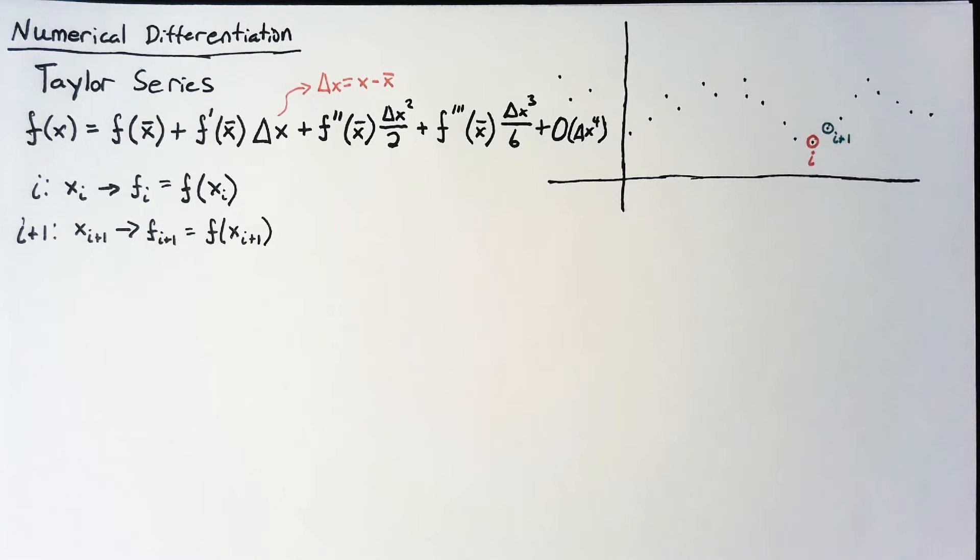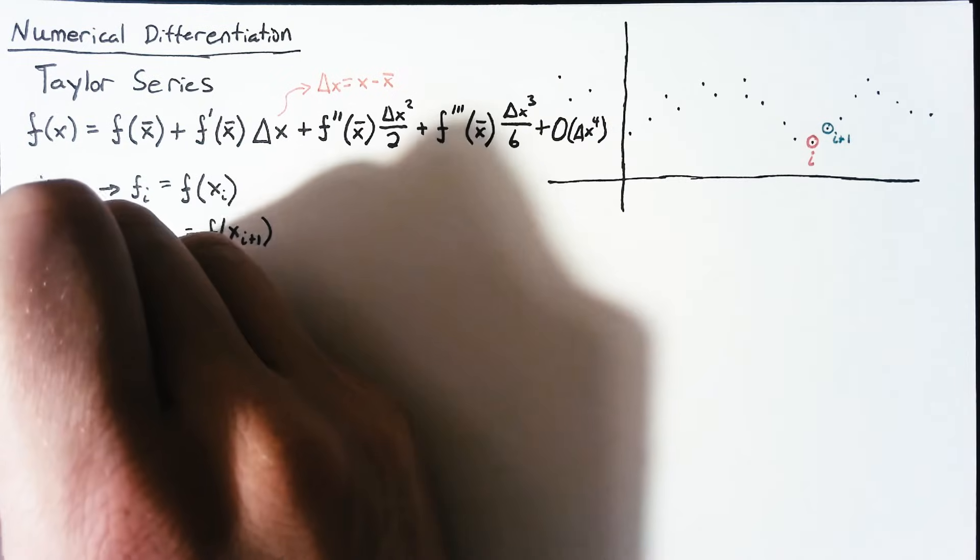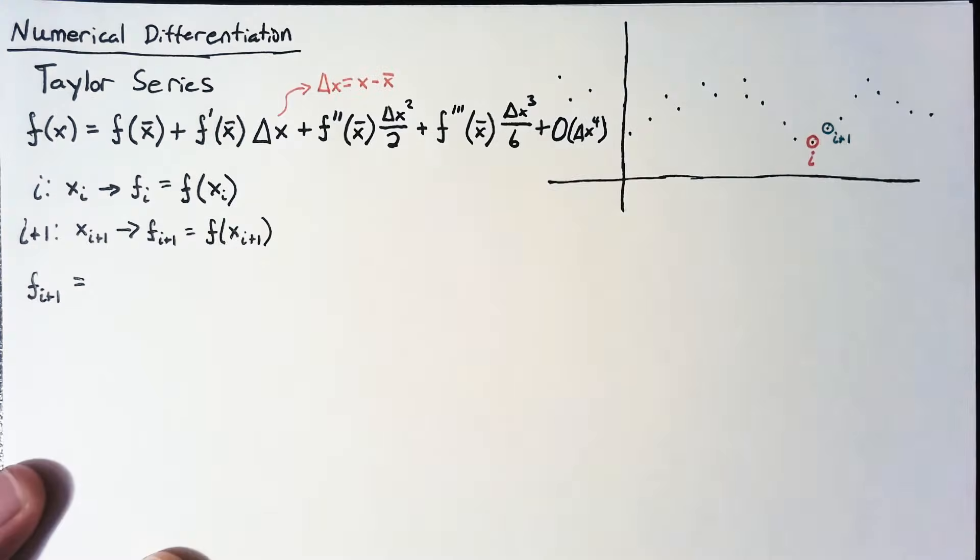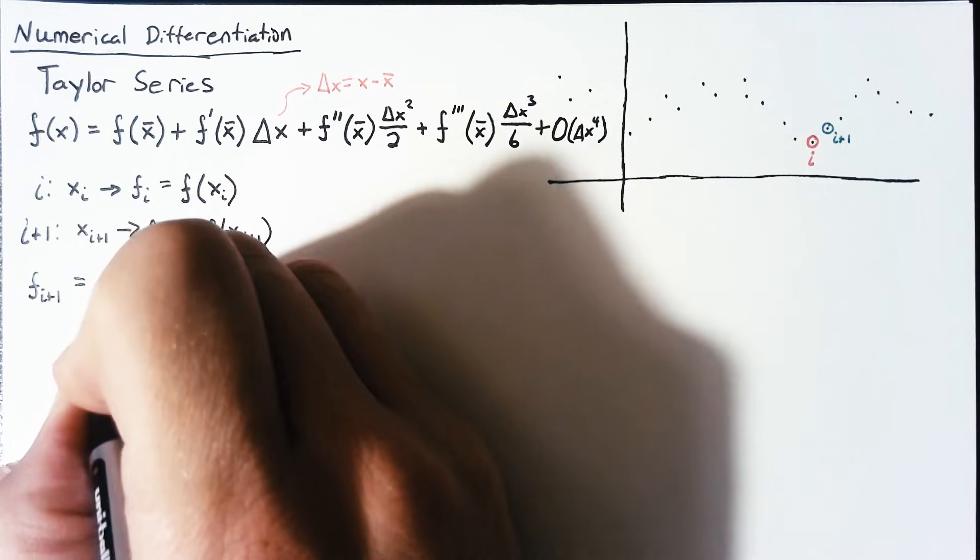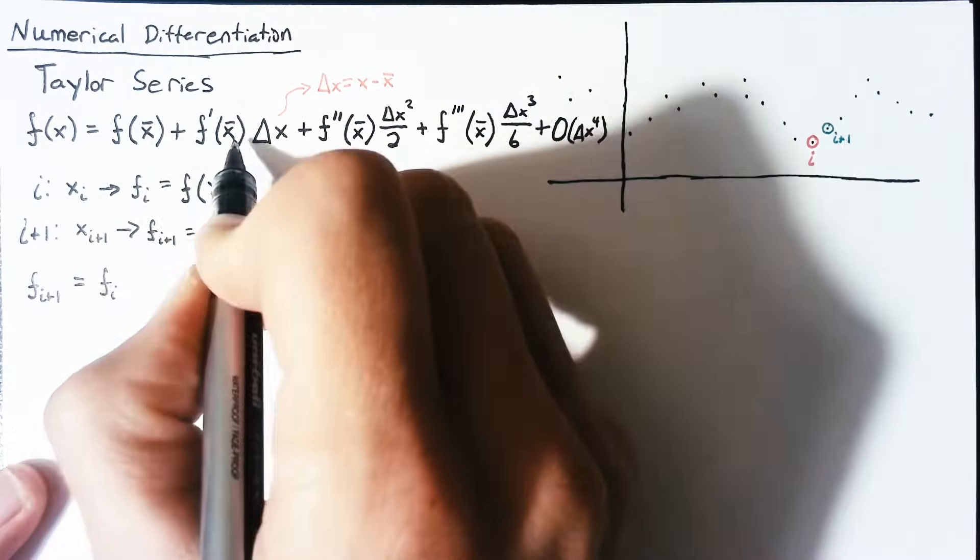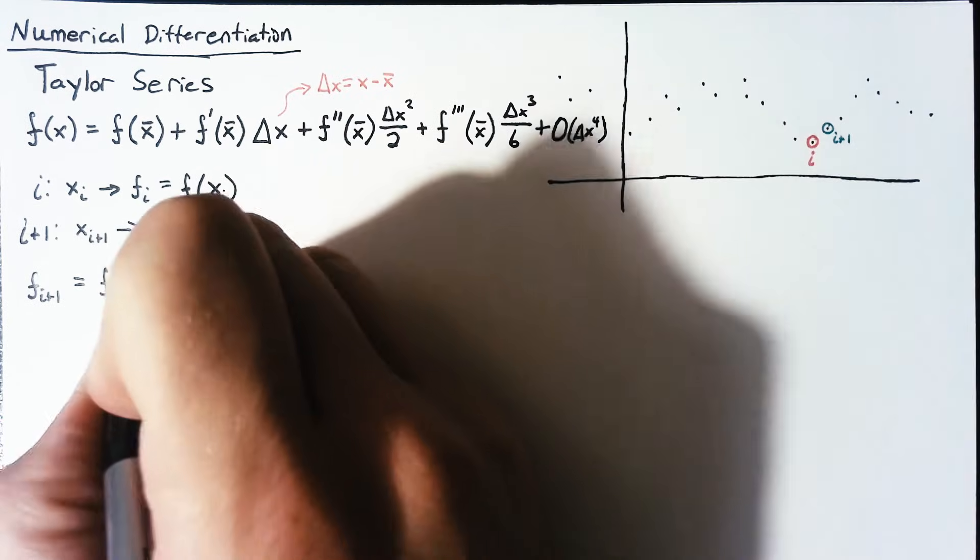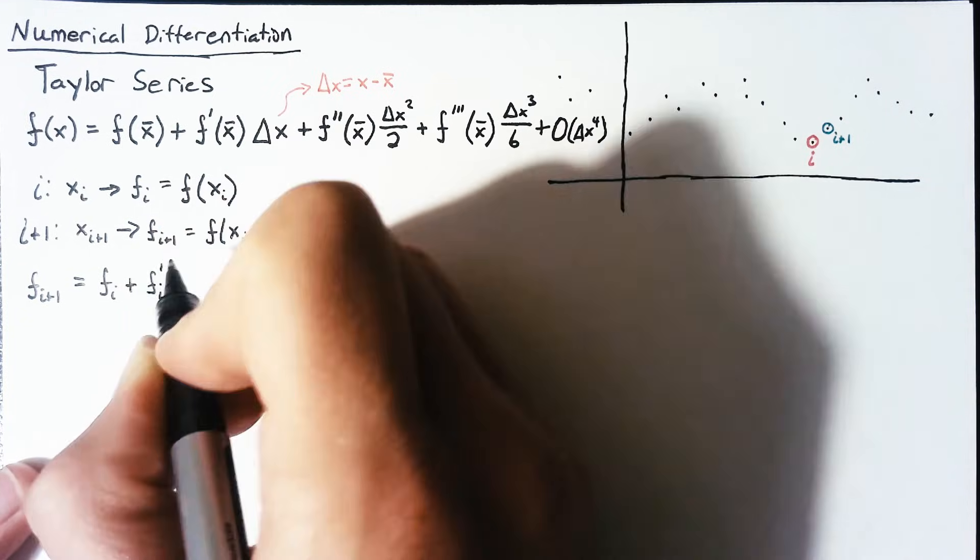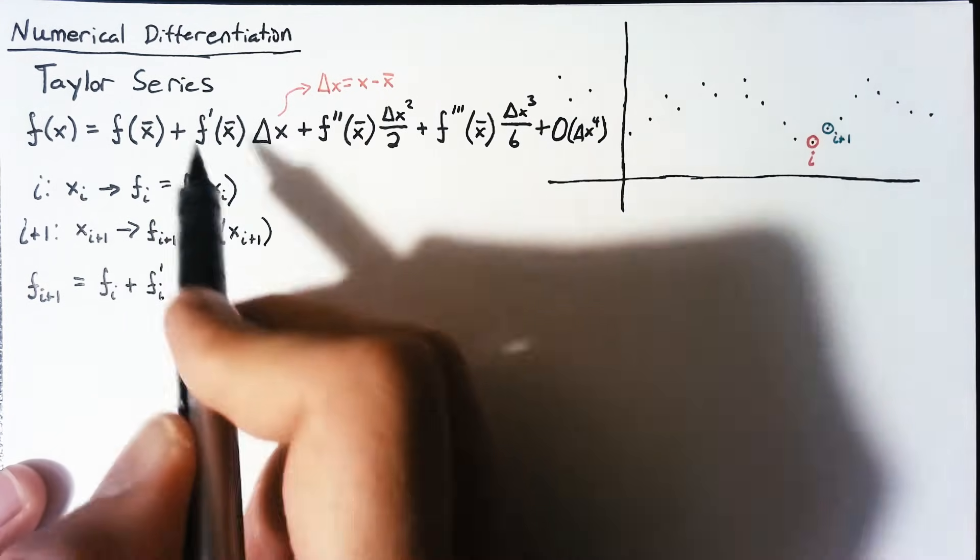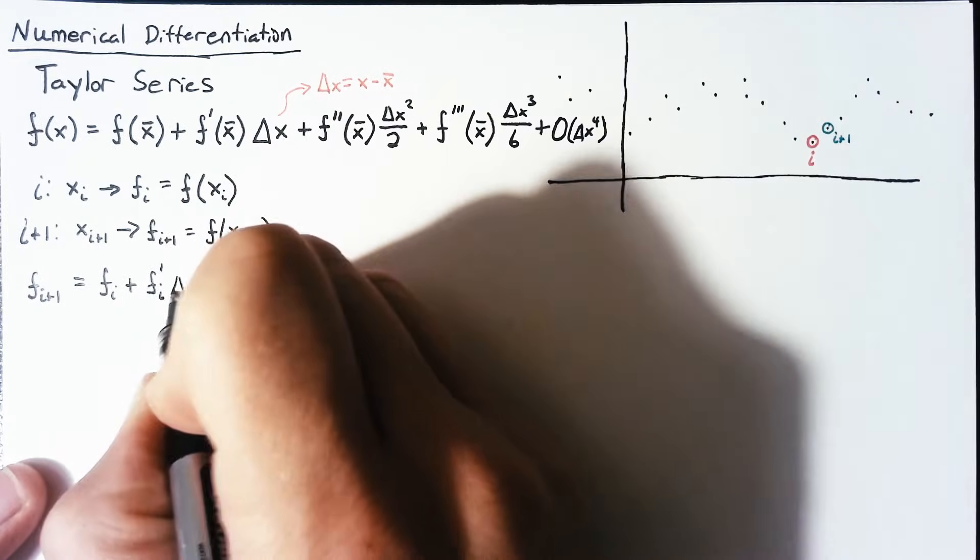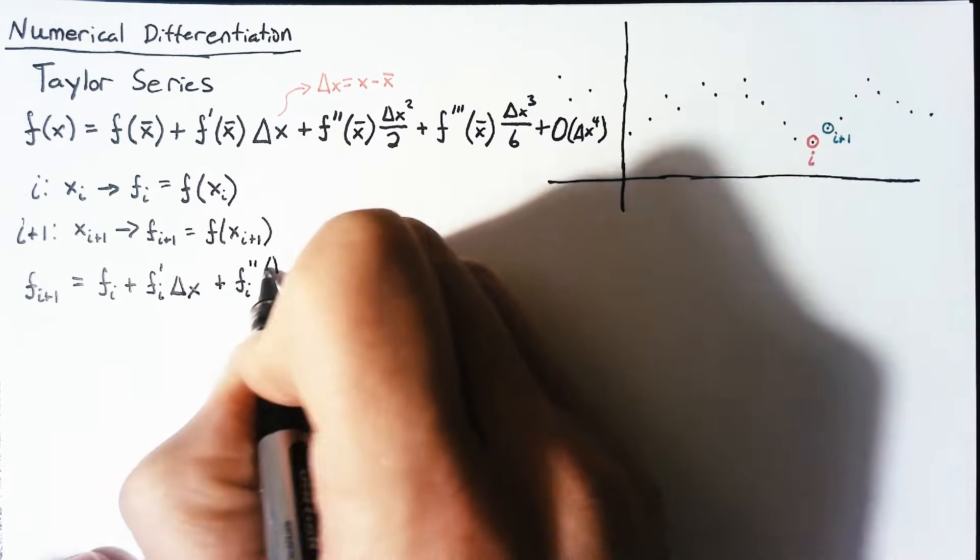So with this nomenclature, let's go ahead and rewrite our Taylor series. We're going to evaluate our function at x sub i plus 1. So we say that f sub i plus 1 is going to be equal to f sub i. So all of our x bars are now going to be x sub i's. So this becomes f prime, but we say fi prime. And this just means f prime of x sub i multiplied by delta x.